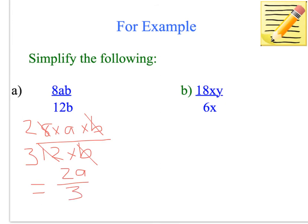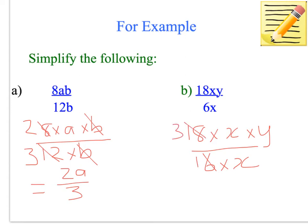So we are left with 2A over 3. For the second example, we write 18 times X times Y divided by 6 times X. We look at the numbers: 6 goes into itself once and into 18 three times. Then X is the common factor in the numerator and denominator, so we cross-cancel those out. That leaves us with 3Y over 1, which actually equals 3Y.